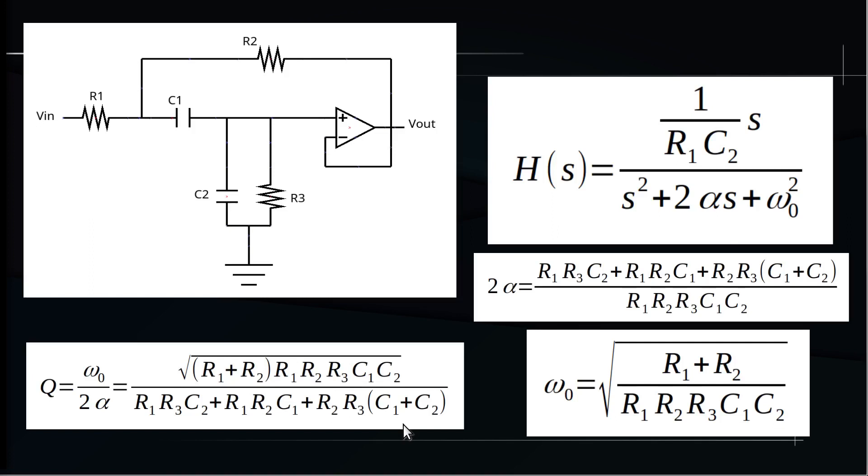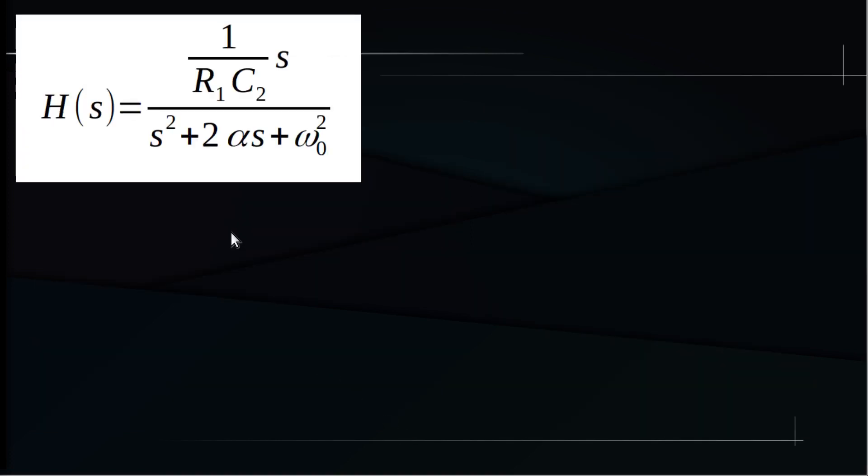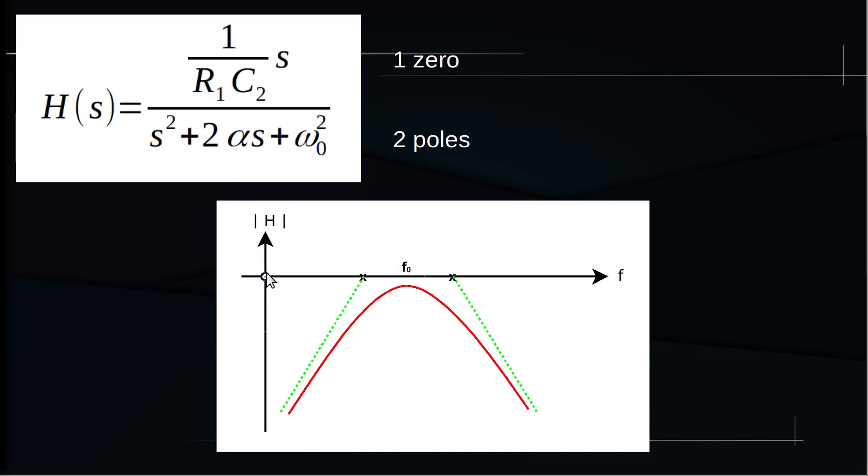Let's now take a closer look at the transfer function itself. You can see that this function has two poles, since there is a second-degree equation at the denominator, and it has one zero provided by the first-degree equation at the numerator. And, as usual, we can draw the diagram of the transfer function module as a function of the frequency. We can represent the position of the zero with a circle, the position of the two poles with the two crosses. And then, based on the position of the poles and zeros, we can draw the asymptotic form of the diagram, represented here in green. Then, based on that, we can draw the actual diagram, which I represented in red.